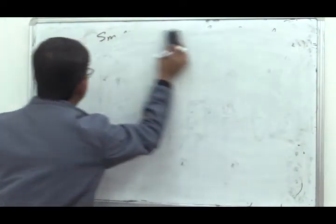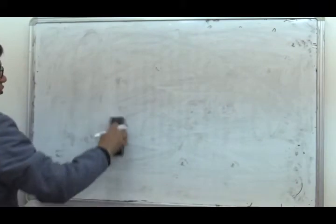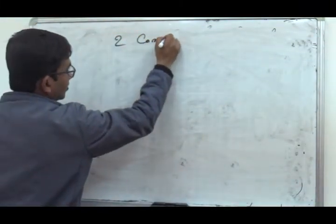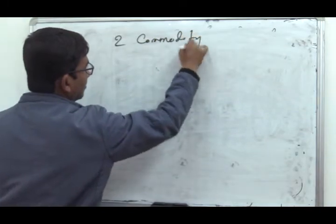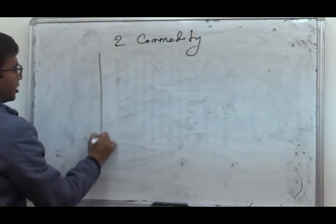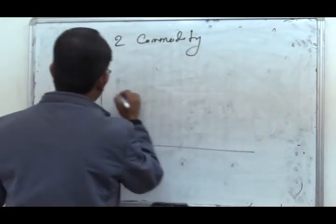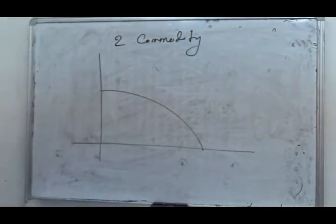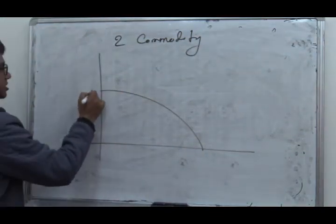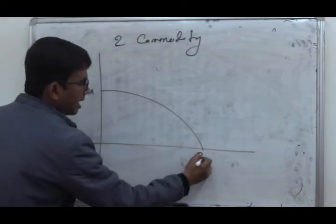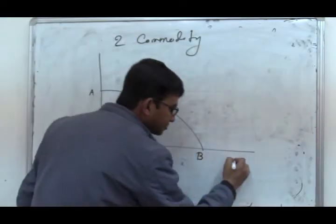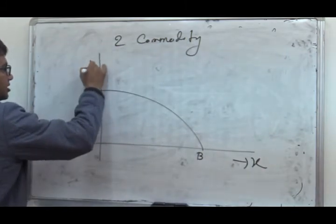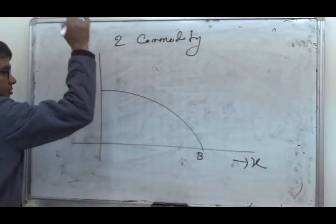Let us consider the easiest case: a two-country, two-commodity case. In the two-commodity case, this is the production possibilities curve of the country. On the horizontal axis we measure X, and on the vertical axis we measure Y.